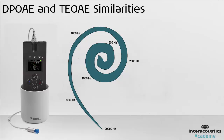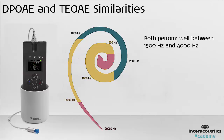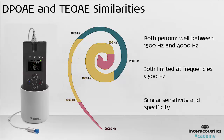There are many other similarities between TEOAE and DPOAE. Firstly, they both perform well between 1500Hz and 4000Hz. Secondly, they are both limited at testing frequencies of 500Hz and below. Lastly, the sensitivity and specificity of DPOAE and TEOAE are considered similar and are for most people not a reason for preferring one over the other.